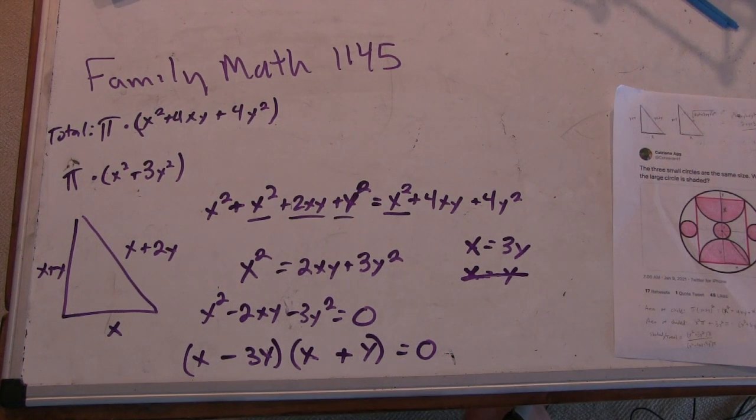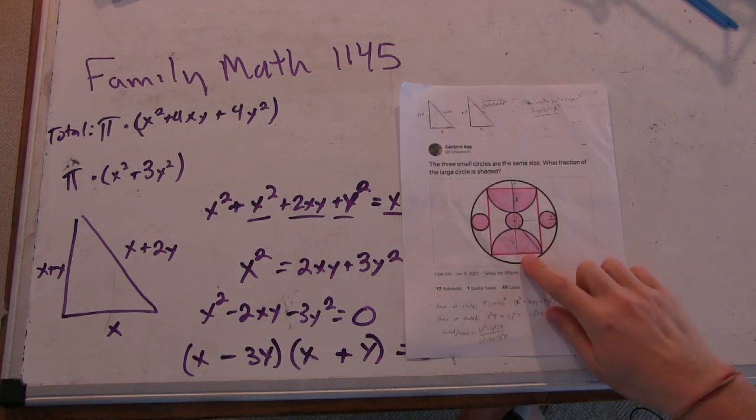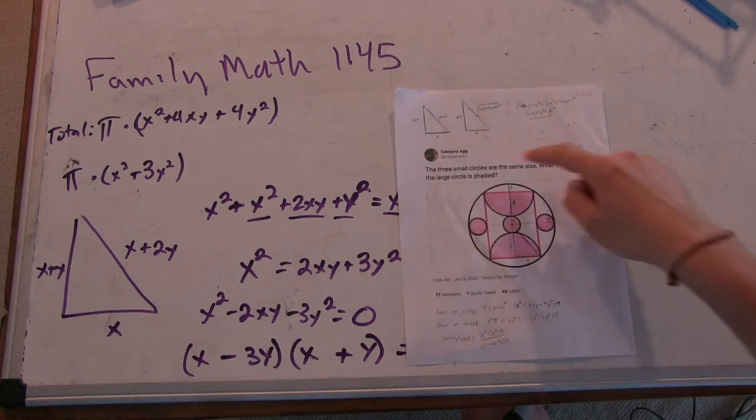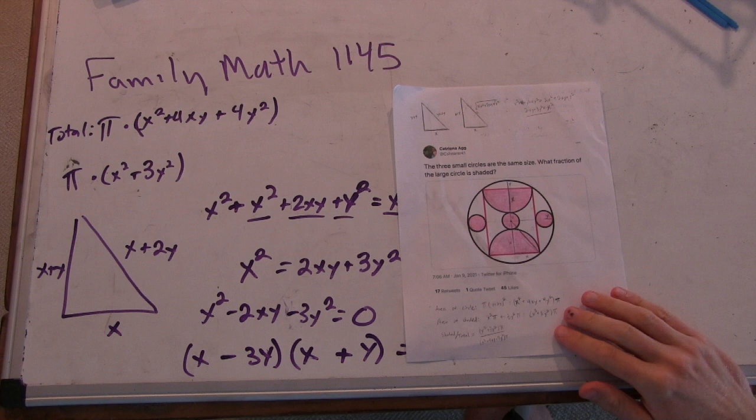Okay, so we're looking for the ratio of the pink area to the area of the whole circle, I think. So how are we going to determine that now?